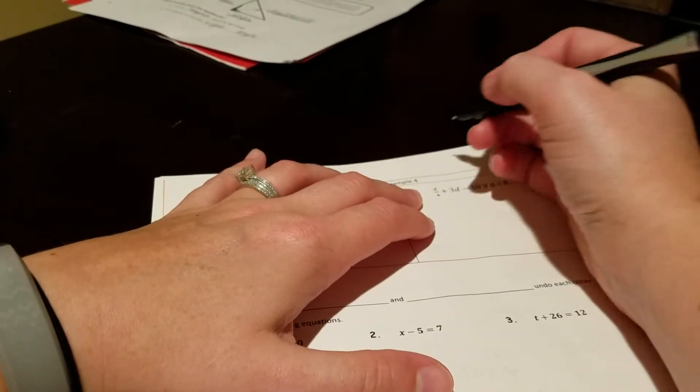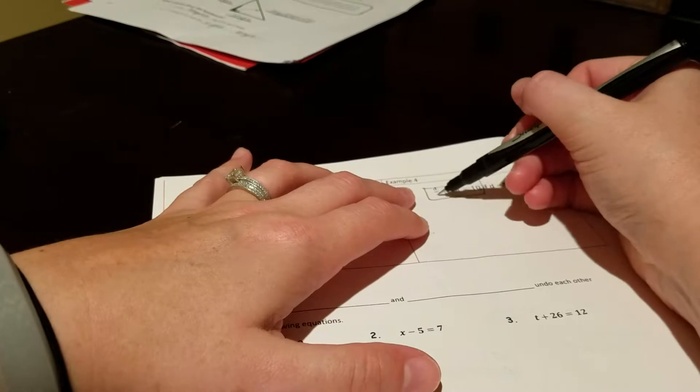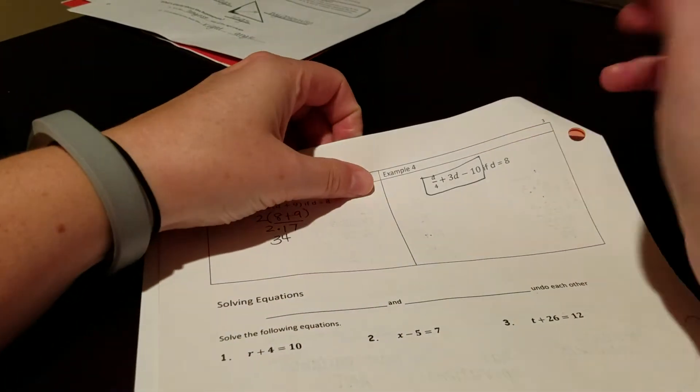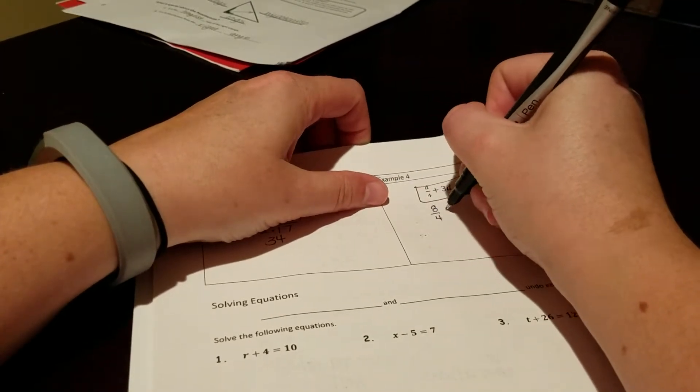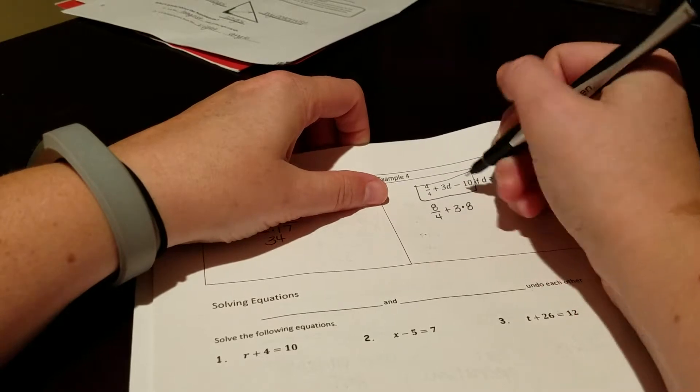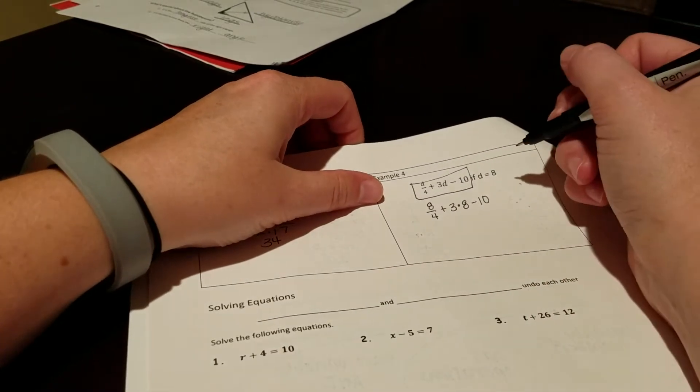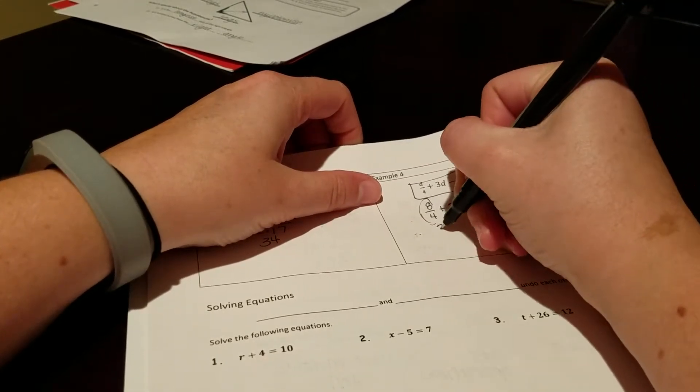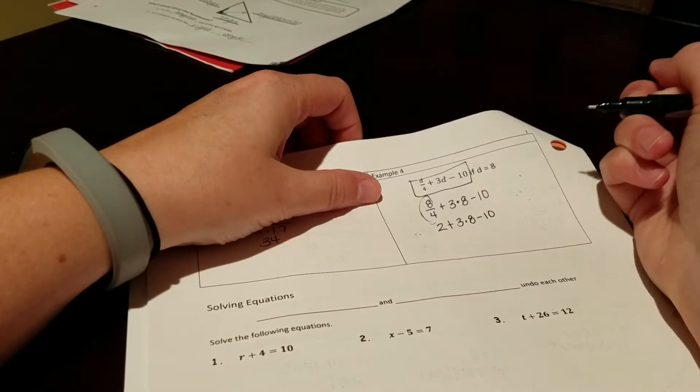Example 4, I didn't have you work ahead. Here's our expression. And if you look at this first part, d over 4. Over 4 really means we are dividing by 4. So we want if d is 8. So we are going to have 8 divided by 4 plus 3 times 8 because it's a d minus 10. PEMDAS still applies. The first thing we come across is this division. 8 divided by 4 is 2 plus 3 times 8 minus 10.